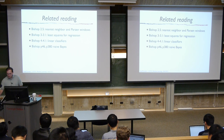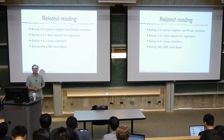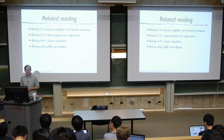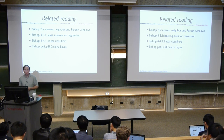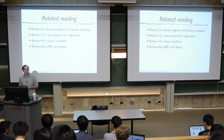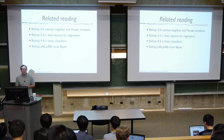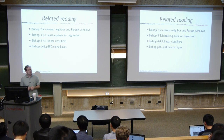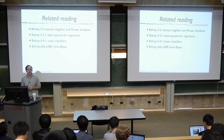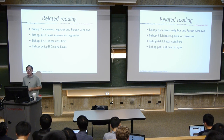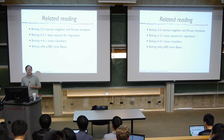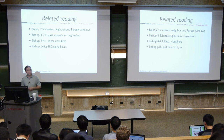Welcome to class. Someone asked during office hours to put up related reading for the material we've been discussing. The first two chapters of the Bishop text, linked from the website, are good background reading — they cover probability and the philosophy of why machine learning is useful. Specifically, there are sections on nearest neighbor, least squares, linear classifiers, and today we're going to be talking about naive Bayes.